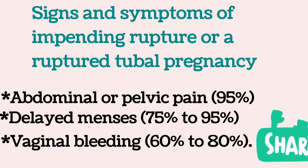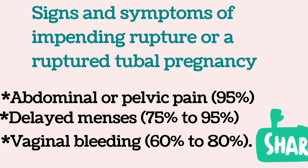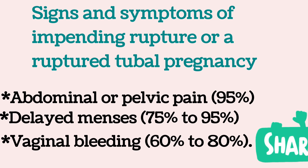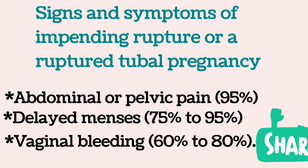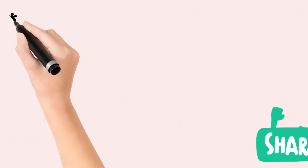Vaginal bleeding occurs from the breakdown and shedding of the decidual lining of the uterine wall, associated with decreased hormone production by the corpus luteum and inadequate human chorionic gonadotropin production by the ectopic trophoblast. Pain often precedes vaginal bleeding.